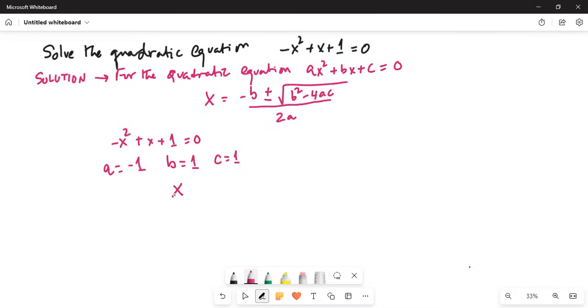So my solution is x equals minus b, which means minus 1. Remember b is 1 in this case. Plus or minus square root of b squared—1 squared—minus 4 times a times c. My a is minus 1 and c is 1, divided by 2 times a, which is minus 1.